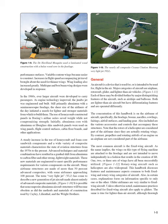In the 1960s, ever-larger aircraft were developed to carry passengers. As engine technology improved, the jumbo jet was engineered and built. Still primarily aluminum with a semi-monocoque fuselage, the sheer size of the airliners of the day initiated a search for lighter and stronger materials. The use of honeycomb-constructed panels in Boeing's airliner series saved weight while not compromising strength. Initially, aluminum core with aluminum or fiberglass skin sandwich panels were used on wing panels, flight control surfaces, cabin floor boards, and other applications. A steady increase in the use of honeycomb and foam-core sandwich components and a wide variety of composite materials characterizes the state of aviation structures from the 1970s to the present.